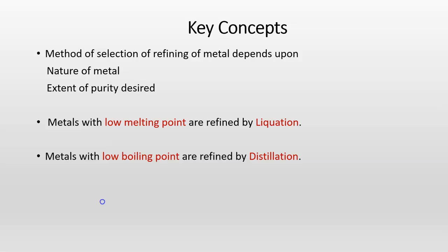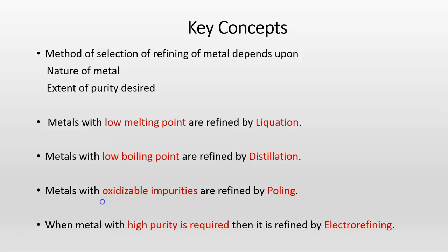Metals with low boiling point are refined by distillation. Metals with oxidizable impurities are refined by poling and when metal with high purity is required then it is refined by electro-refining.